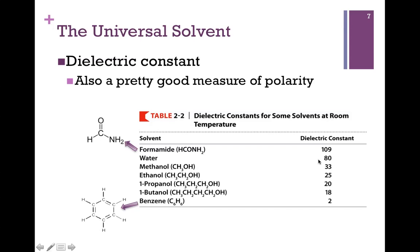The higher this value, the better it is as an insulator of charge. Now, I'll never ask you to memorize a table from your book, but let's notice the trend. Here's formamide at the top, highest dielectric constant in our table, and here's benzene at the bottom, a very low dielectric constant. Let's consider those molecules.